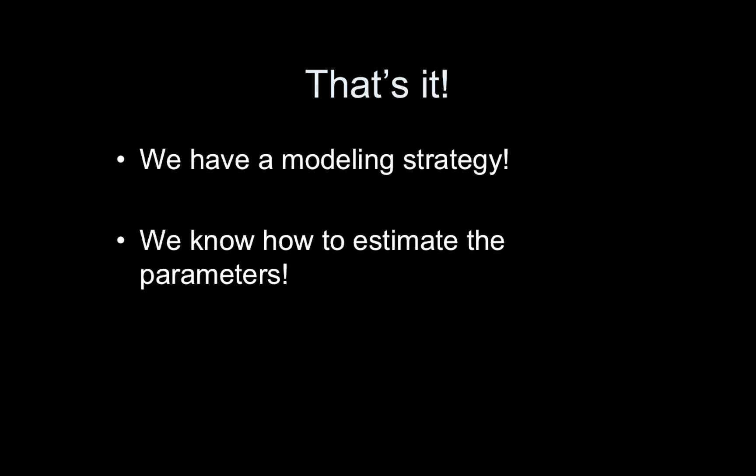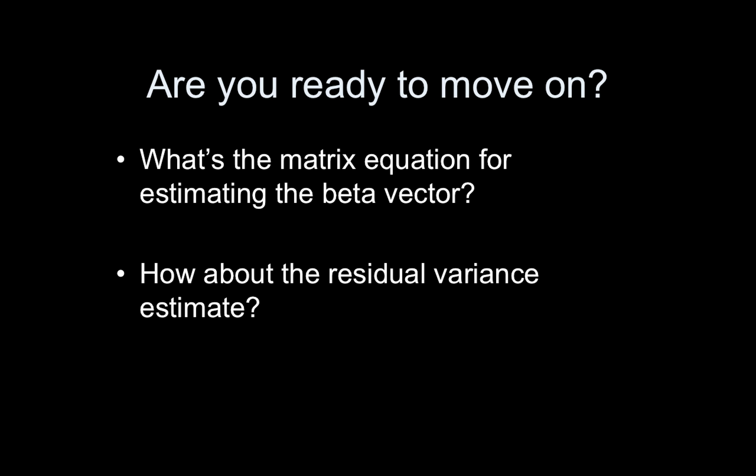That is it. We now have a modeling strategy and we know how to estimate the parameters, so we are on our way. What's missing is p-values — next time I'm going to step through how we actually carry out our inferences on these things. Are you ready to move on? Can you answer these questions: What is the matrix equation for estimating the beta vector? It'd be great if you could commit that to memory, especially if you think you'll ever code anything on your own. How about the residual variance estimate — what was the equation for that? Thanks for your time. Check the information box for the link to the Facebook group. Please join if you haven't already. You can follow on Twitter and Tumblr. I appreciate your attention and your involvement. Have a great day.